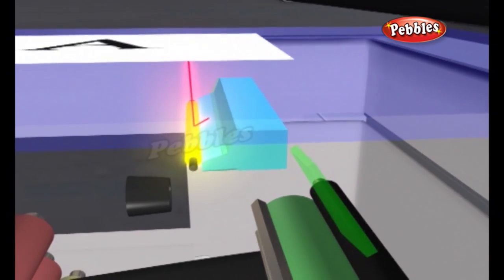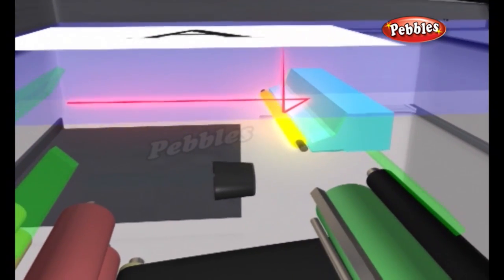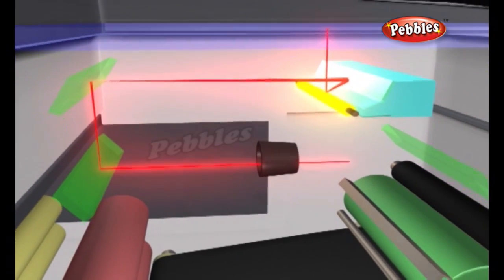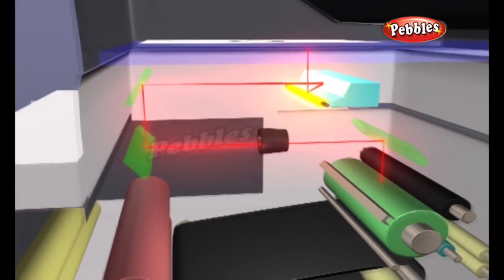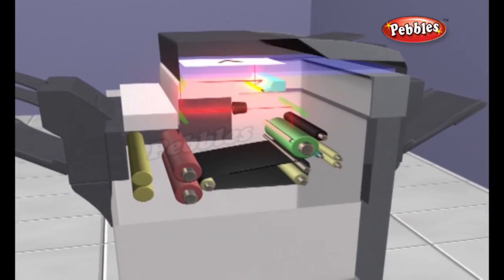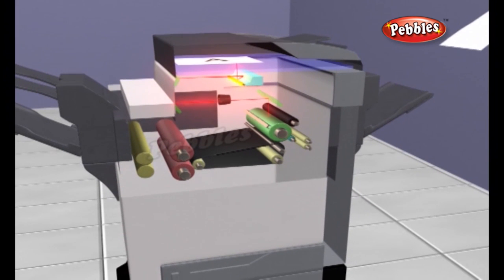As light reflects off of blank areas of the paper, mirrors direct it through onto the drum surface. Like dark clothing on a hot sunny day, the dark areas of the original absorb the light and the corresponding areas on the drum's surface are not illuminated.